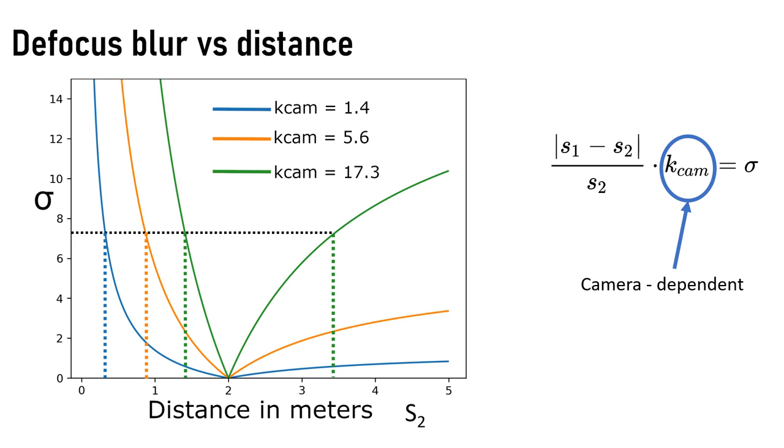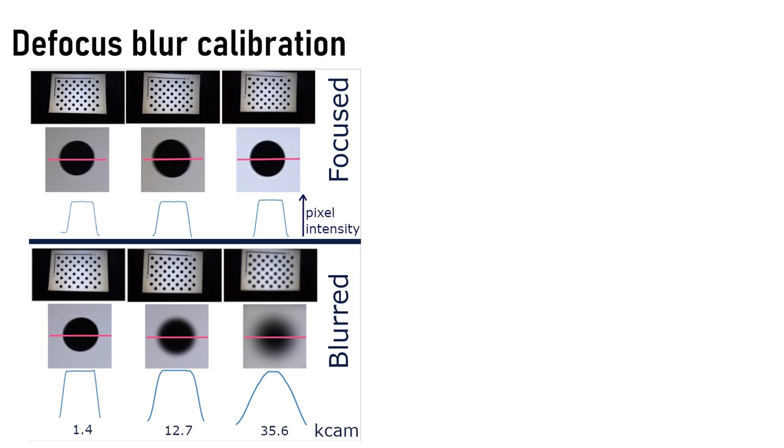We need to first estimate this camera-dependent constant that's constant for a given camera in order to use this in our model, so the model can get rid of the camera-dependent effects of the image to estimate the depth from defocus blur.